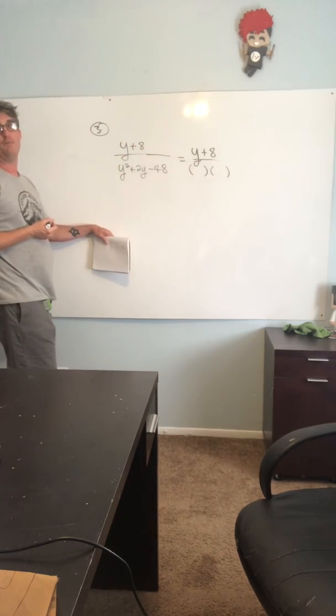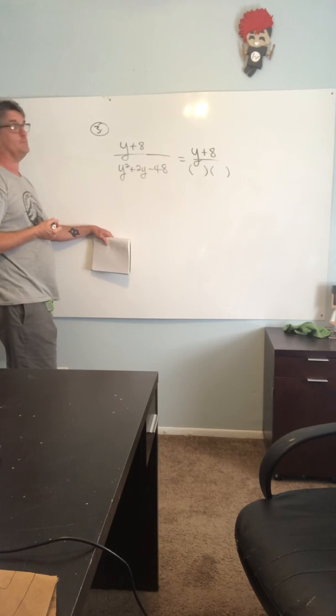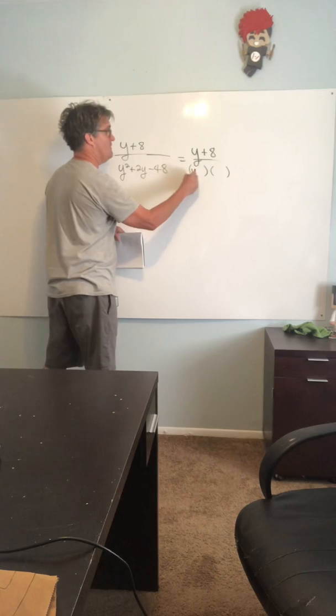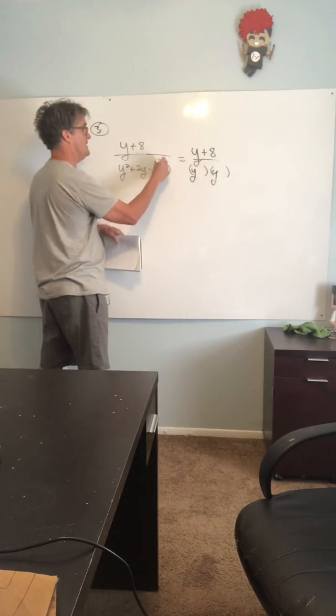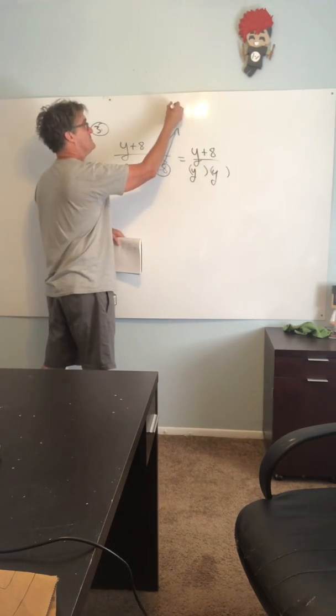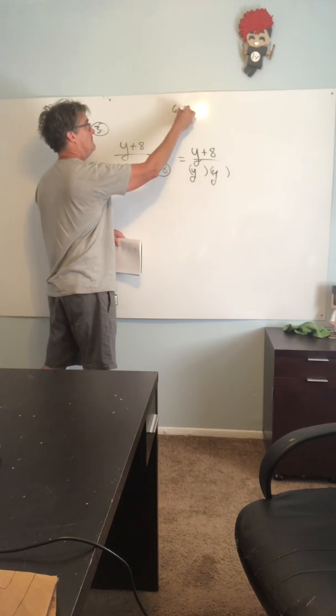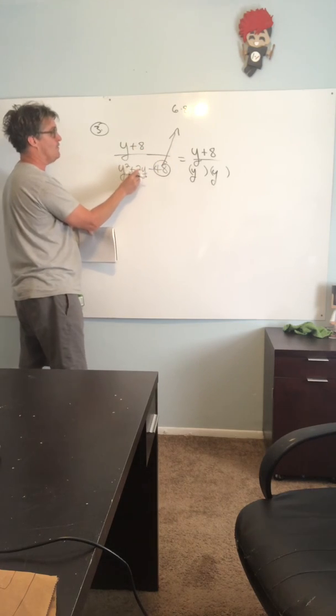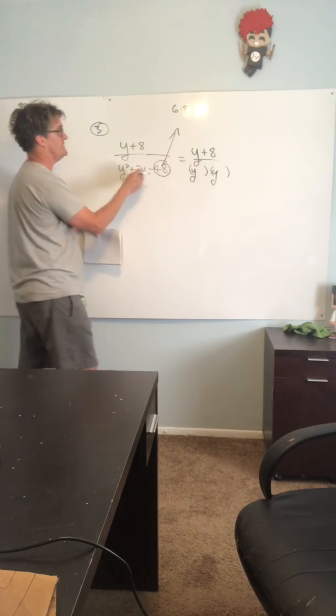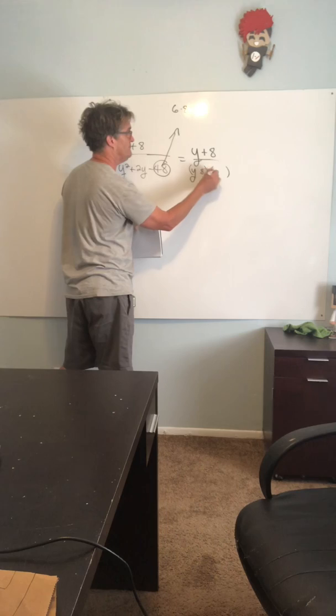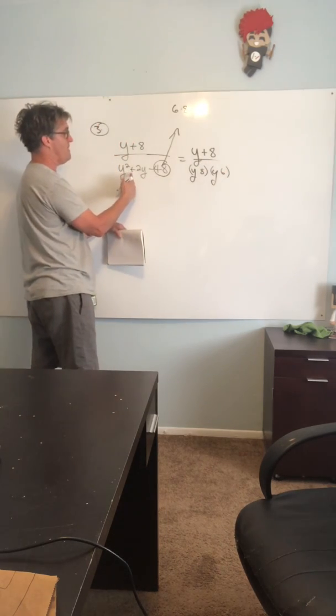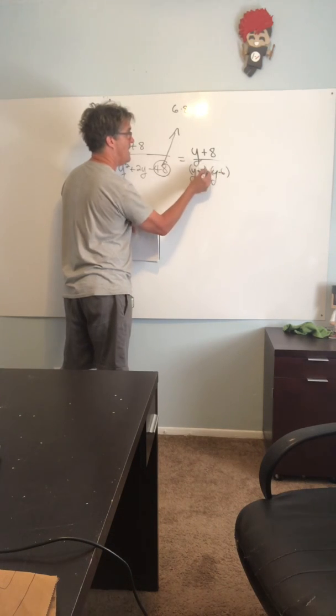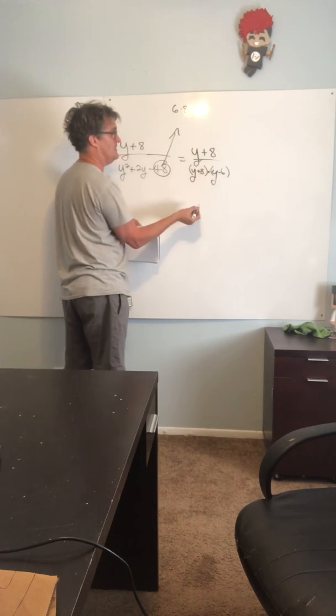So remember how we did that? We did y and y. Take your 48, circle it, start listing factors of 48. I like 6 times 8. You're looking for the pair of factors that's going to add or subtract to give you 2. In this case it's going to subtract to give you 2. Take the sign, you want a positive 2, so the higher one gets a positive. Now because you have a multiplication right here, this is going to give you 2.